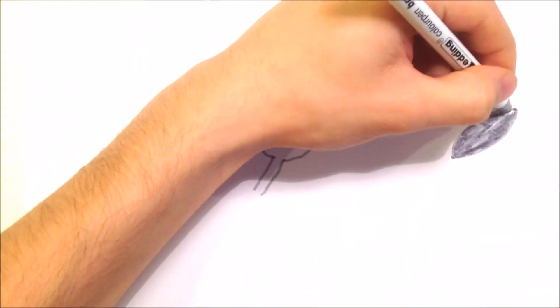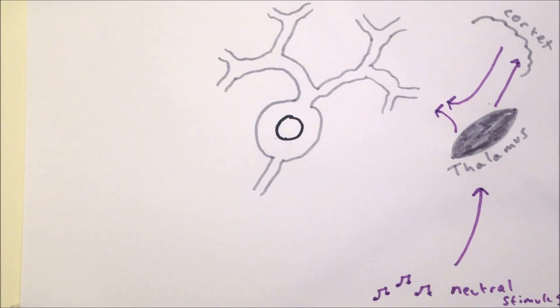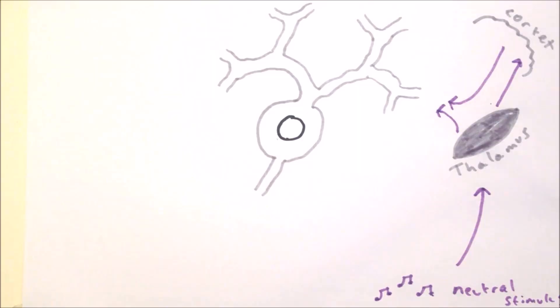The neutral stimulus of the sound also flows through the thalamus to the auditory cortex. The thalamus and cortex then also project to the lateral nucleus of the amygdala.